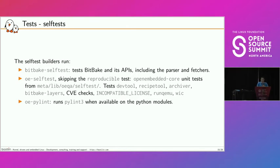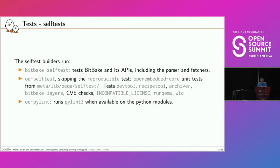We have self-test builders running BitBake self-test, which tests BitBake and its API including the parser and fetchers. We also have OE self-test, which skips the reproducible test because it takes a lot of time — most of the nine hours is the reproducible build, which builds twice and compares. It tests other things too, and also runs OE PyLint when PyLint 3 is available, checking Python modules in BitBake and OpenEmbedded-Core.